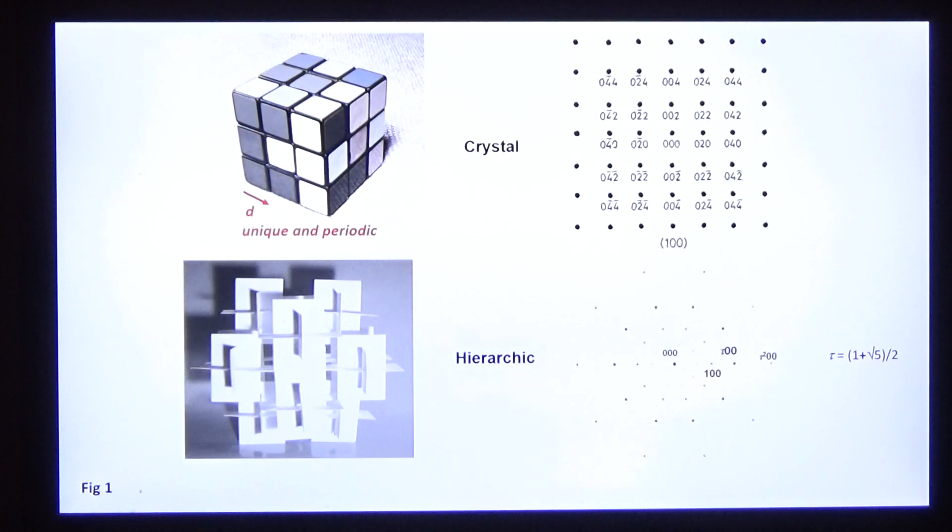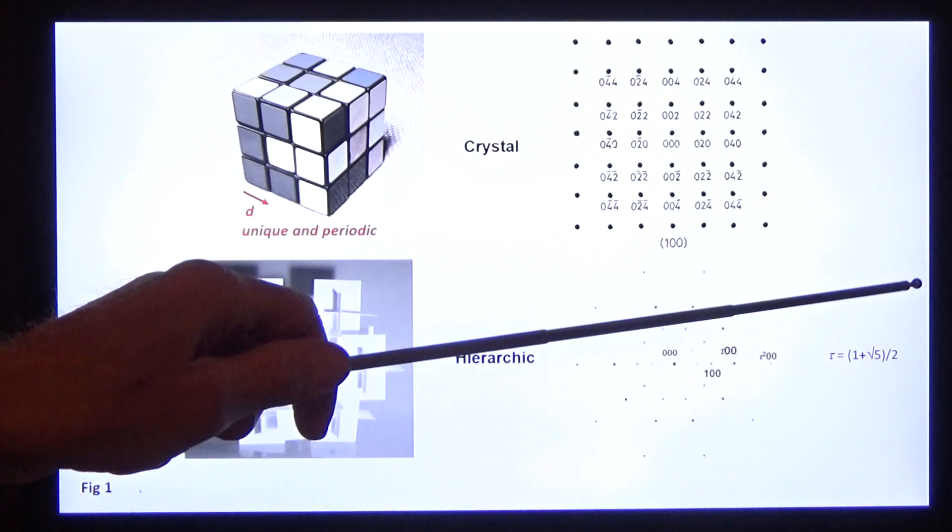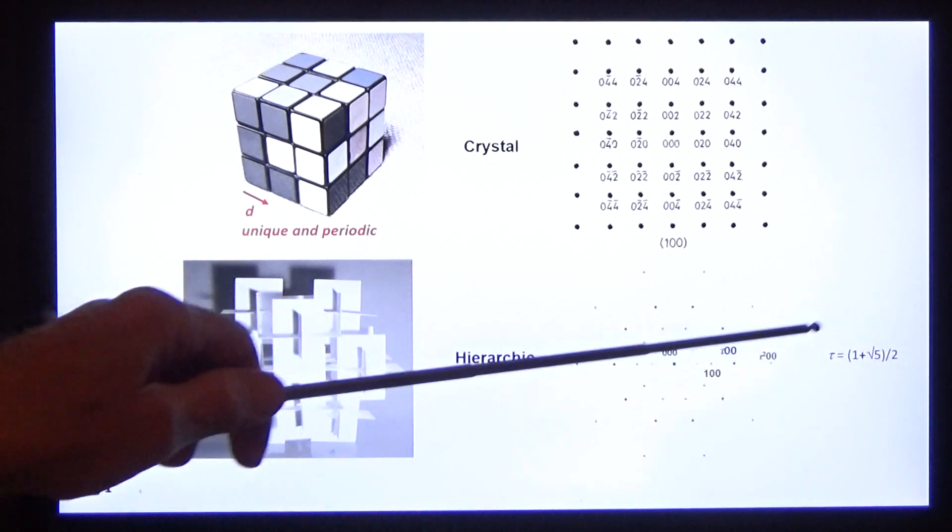N is integral, periodic, harmonic, and here's d. The hierarchic icosahedra are everything that crystals aren't. N is 0, 1, tau, tau squared, tau cubed, tau to the fourth. Tau is irrational.